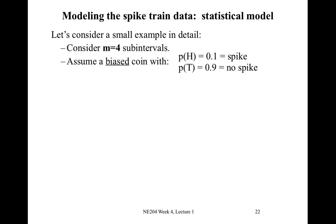Let's consider a small example of this statistical modeling in detail. We'll consider four sub-intervals, so we flip our coin only four times: M = 4. We'll assume a biased coin where the probability of H is 0.1 — that represents a spike — so the probability of tails is necessarily 0.9, meaning no spike. Why must it be 0.9? We must have the sum of these two probabilities equal to 1, because when we flip our coin we observe either heads or tails. We have to account for all possible outcomes, so these probabilities must sum to 1.